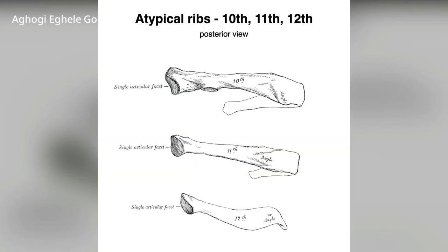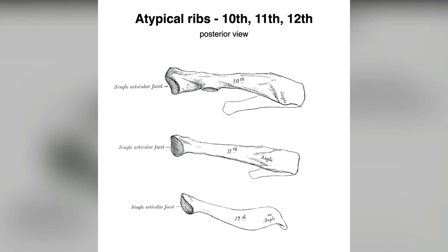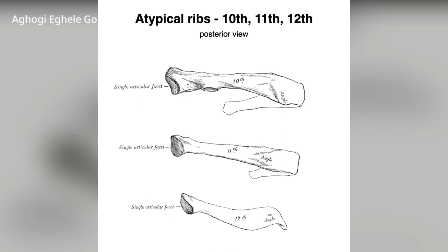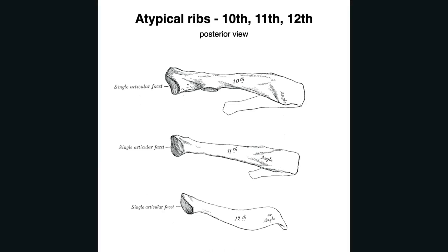Rib 11 is half the length of rib 10, has one facet for articulation with its corresponding vertebra, and is a floating rib. Rib 12 is also very short, a floating rib, and its head contains just one articular facet for articulating with T12. These features make ribs 11 and 12 atypical.